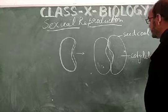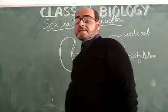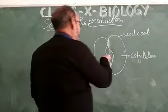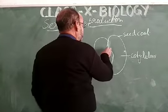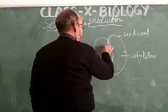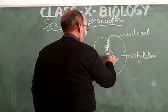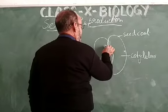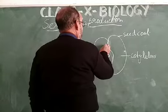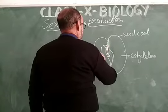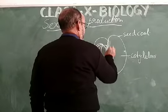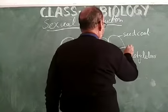There is one cotyledon, and if the seed is germinating, you will find structures like the radicle and the plumule.